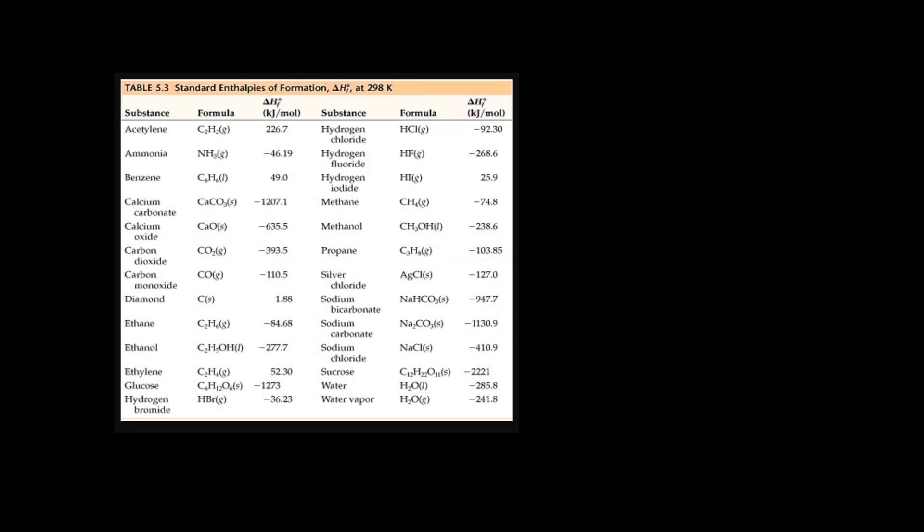So for example to create acetylene from its most stable elemental form it would consume 226.7 kilojoules per mole of heat.